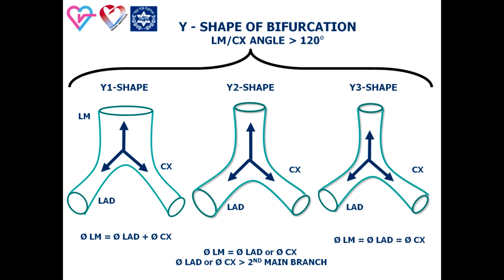In patients with Y-shape left main bifurcation, we classify three subtypes. Y1 is when the left main diameter is nearly equal to the sum of the LAD and circumflex diameters — a variant of large left main with relatively small diameter of rising branches. Y2 shape is a variant when the left main diameter is nearly equal to the diameter of one of the main branches. Y3 shape is when the diameters of all left main bifurcation components are approximately equal.